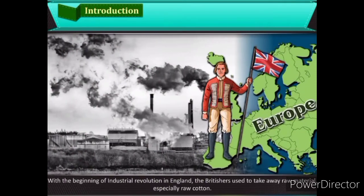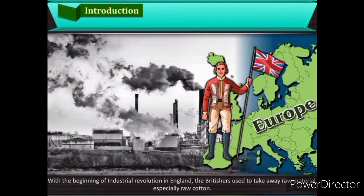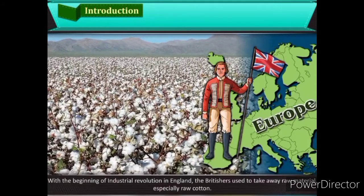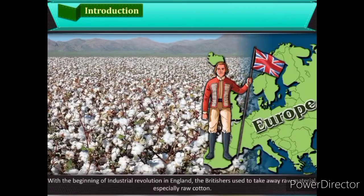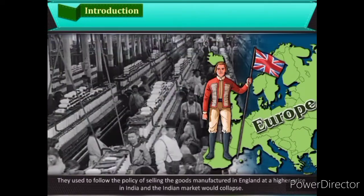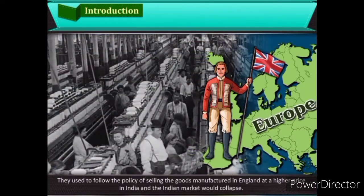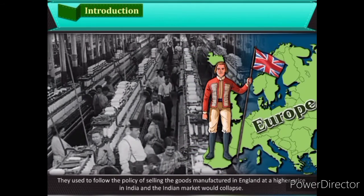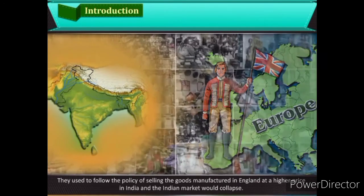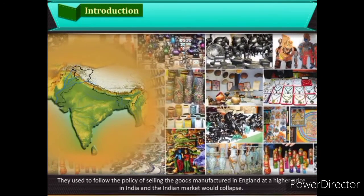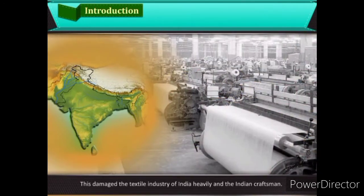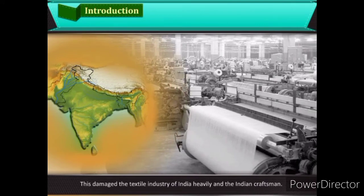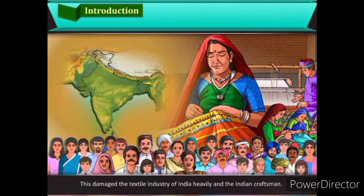With the beginning of the Industrial Revolution in England, the British used to take away raw material, especially raw cotton. They followed the policy of selling goods manufactured in England at a higher price in India, and the Indian market would collapse. This damaged the textile industry of India heavily, along with Indian craftsmen.